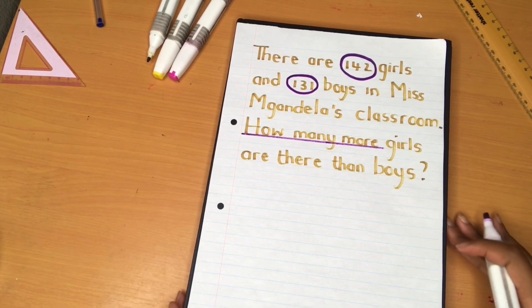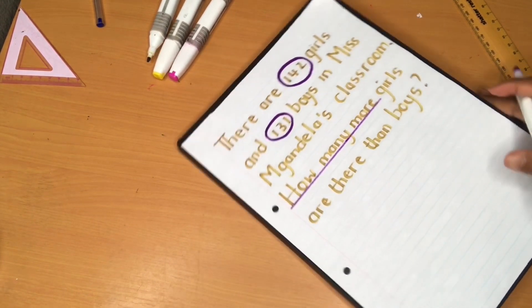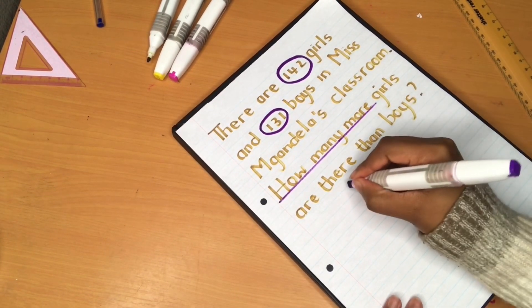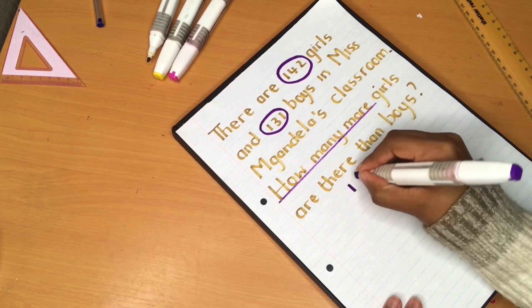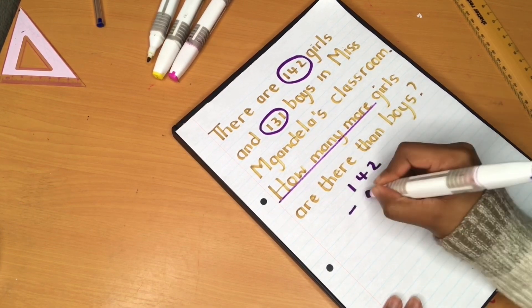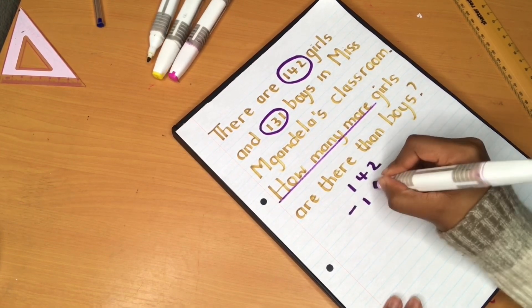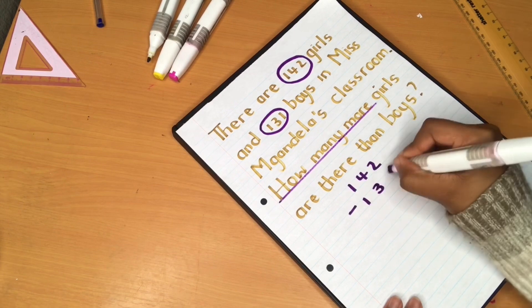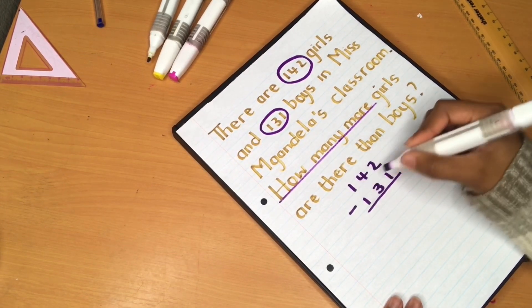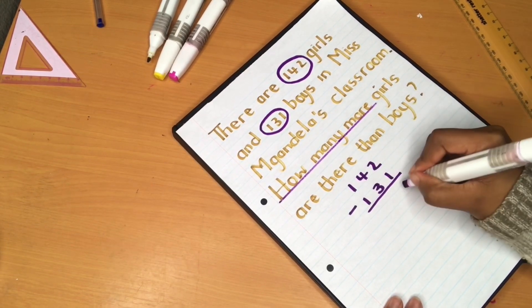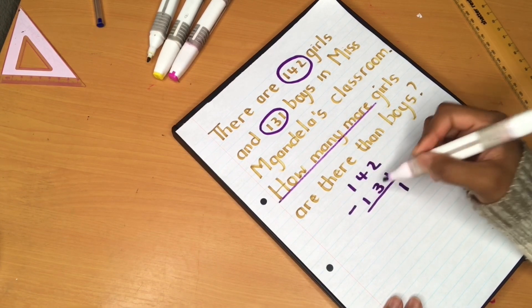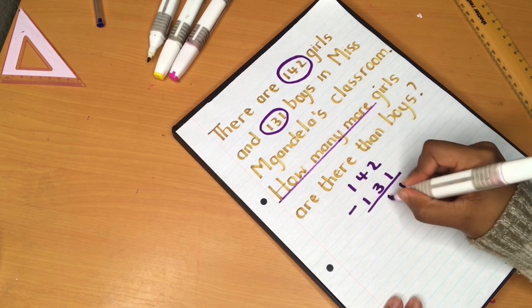Our sum will then be 142 minus 131. 2 minus 1 equals 1. 4 minus 3 equals 1.